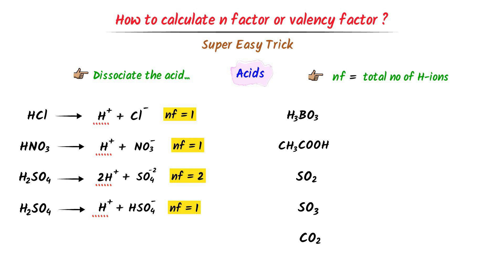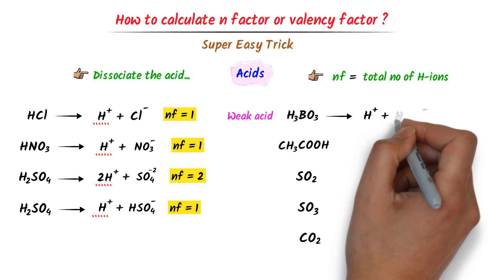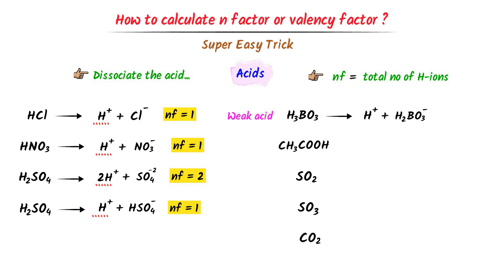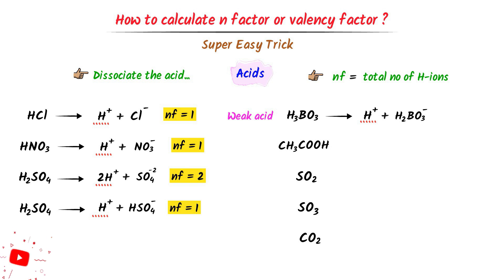In case of boric acid, it is a weak acid — it cannot easily donate hydrogen ions. It gives only one hydrogen ion and water. For example, it dissociates into one hydrogen ion plus H2BO3⁻ ion. There is only one hydrogen ion, so the n-factor of this acid is 1. Similarly, acetic acid is also a weak acid.